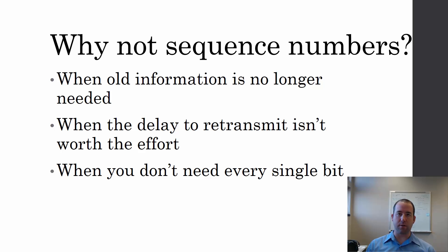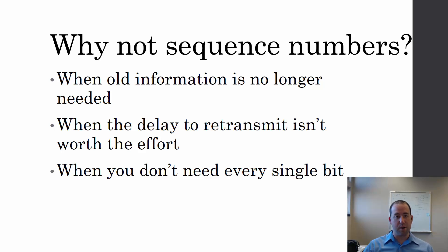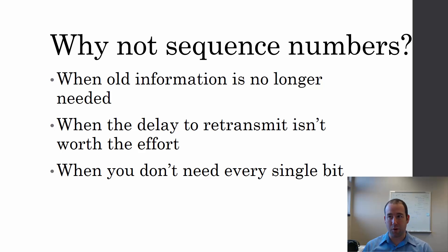So when would you not want sequence numbers? When old information is no longer needed — when every transmission replaces the last one. For example, a sensor transmitting temperature information 10 times a second: on the receiving end, you want just the latest temperature. If one temperature report gets lost, that's okay — just use the next one. You wouldn't want sequence numbers telling you how many temperature reports to wait for; you'd just use the latest report received from the sensor.